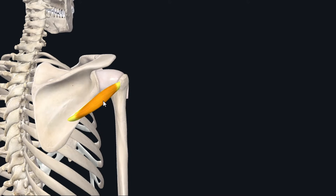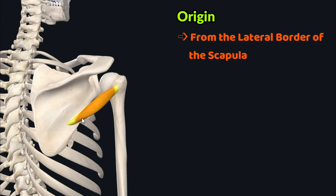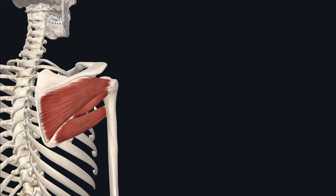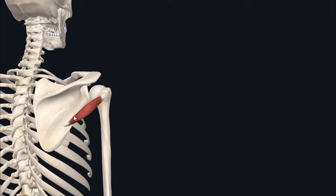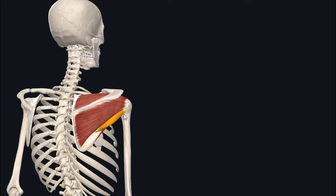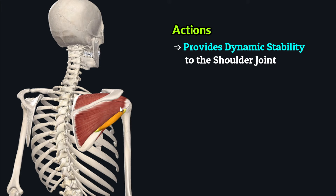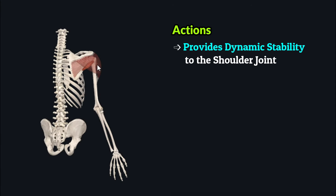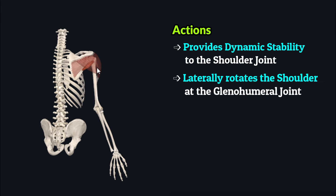The fourth muscle is the teres minor, which originates from the lateral border of the scapula, lying just below the infraspinatus and just above the teres major. It travels superolaterally to insert on the inferior facet of the greater tubercle of the humerus. When acting with other rotator cuff muscles, it provides dynamic stability to the shoulder joint. When acting in isolation, it laterally rotates the shoulder at the glenohumeral joint.